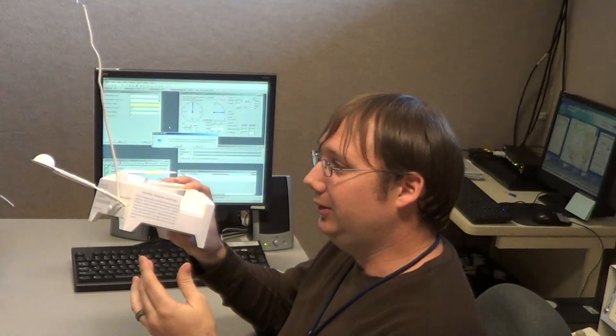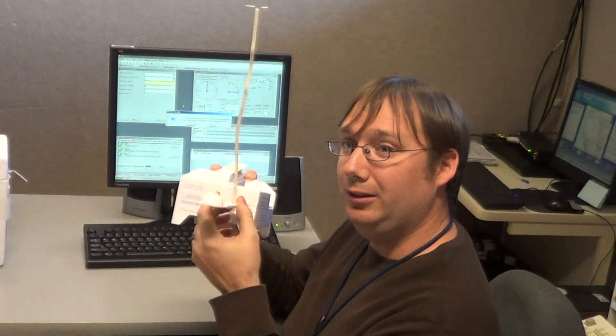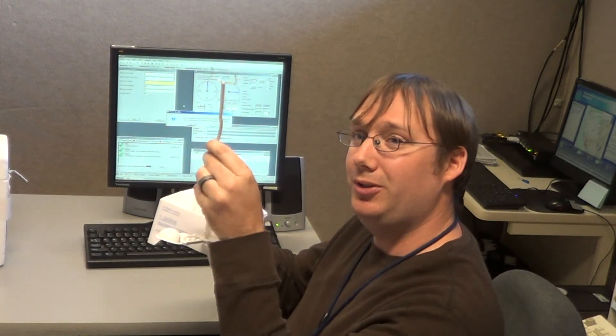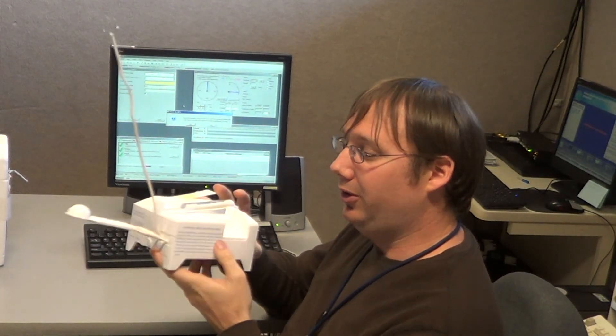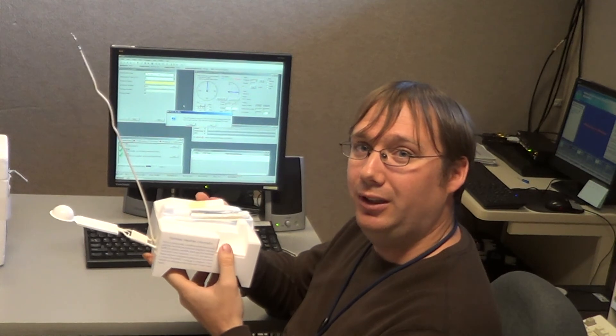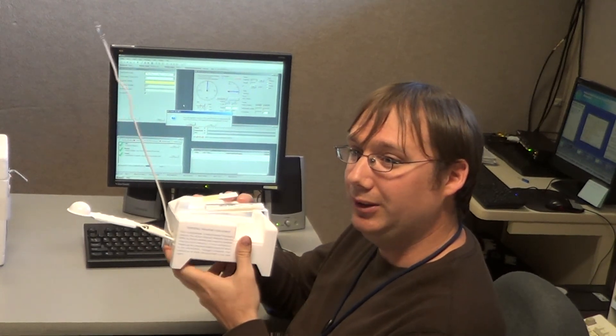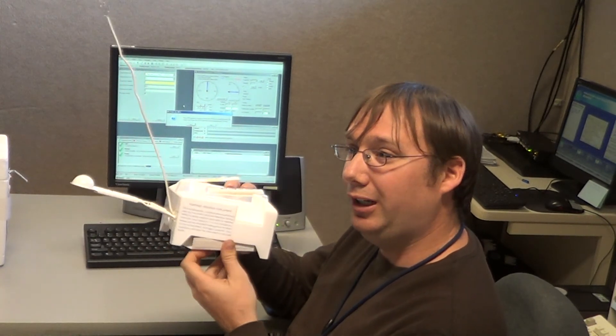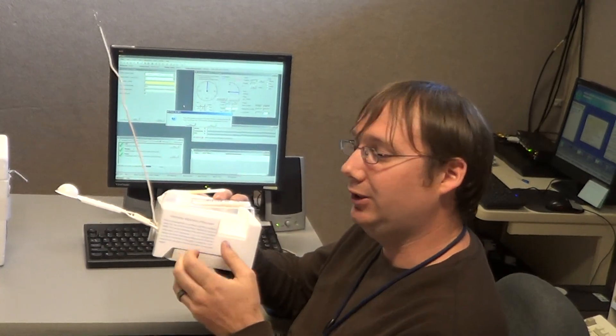All right, this is our radiosonde package. It's a little turtle-looking thing. As you can see, here's different sensors on it. This is for the humidity. This is a temperature sensor here. Internally, we have a pressure sensor and also a GPS. The GPS helps us determine, basically, the wind speed and direction.